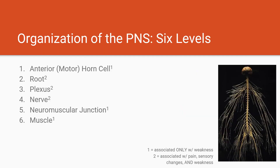In order to understand diseases of the peripheral nervous system you have to have a basic understanding of the organization of the PNS. Specifically it's divided into six different levels, all of which have their own unique pathology. These include the anterior and motor horn cells, the root, the plexus, the nerve, the neuromuscular junction, and the muscle.